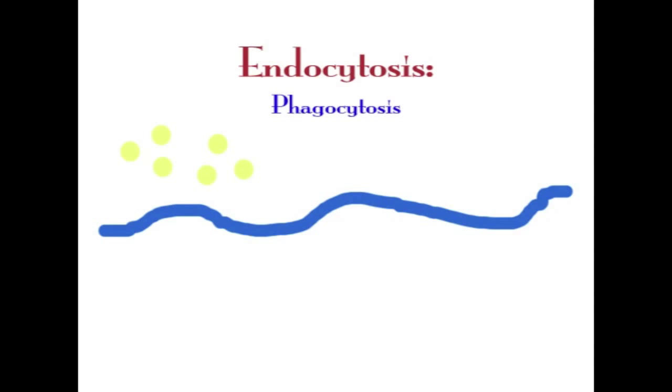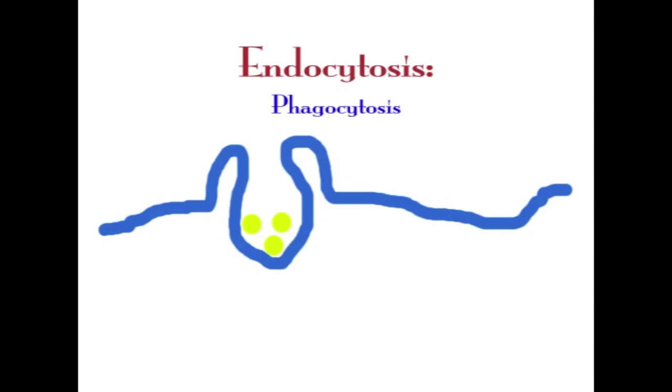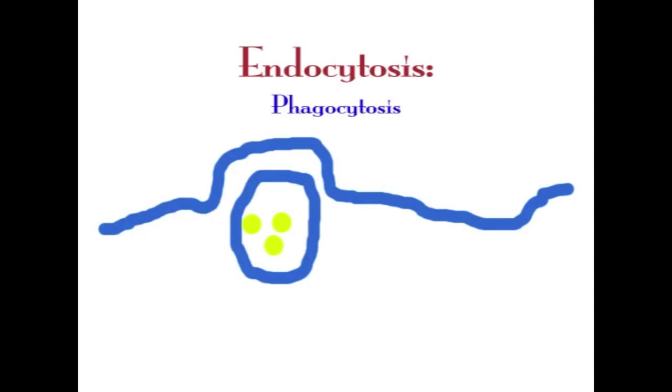Endocytosis is bulk transport of substances. Phagocytosis is cell eating and pinocytosis is cell drinking.